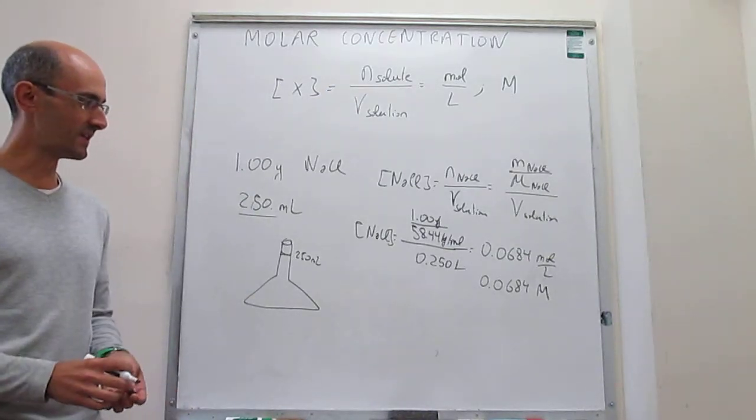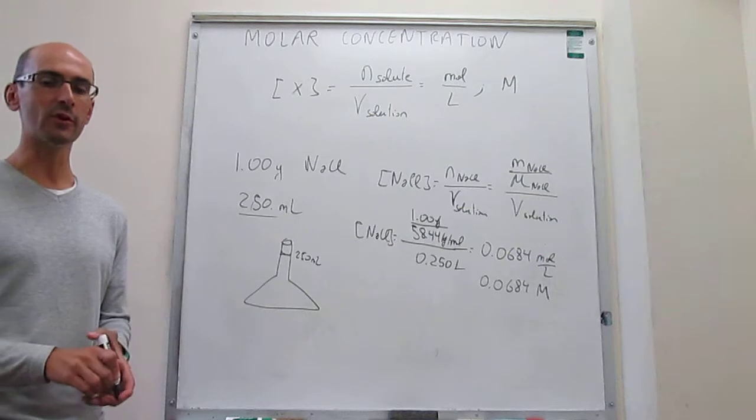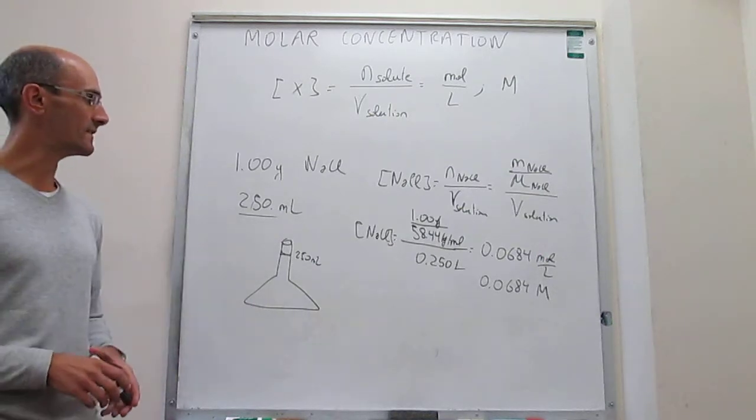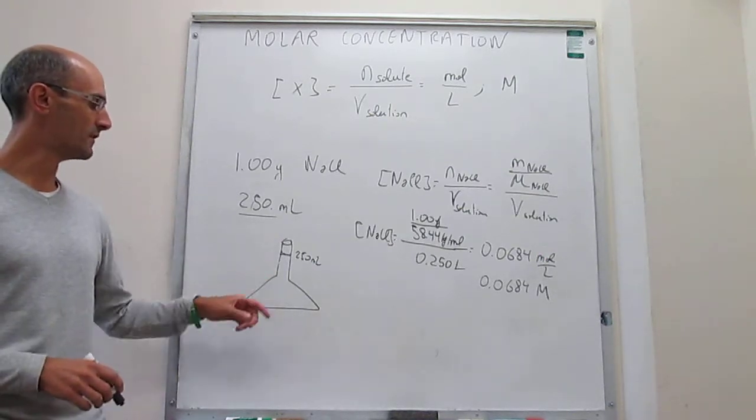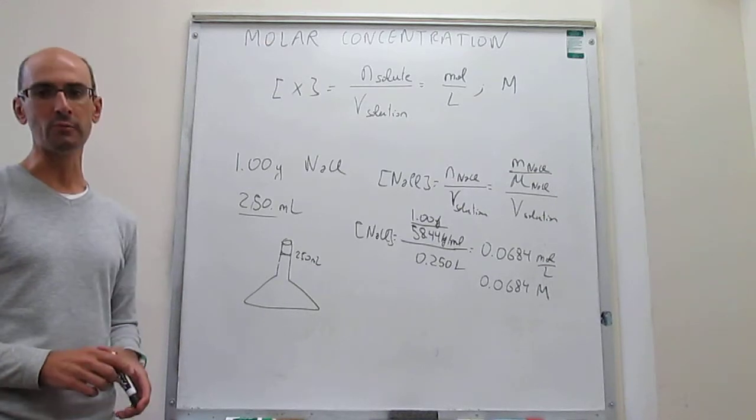So the result is 0.0684 molar. That is the molar concentration in this one gram of sodium chloride dissolved to a volume of 250 milliliters with water.